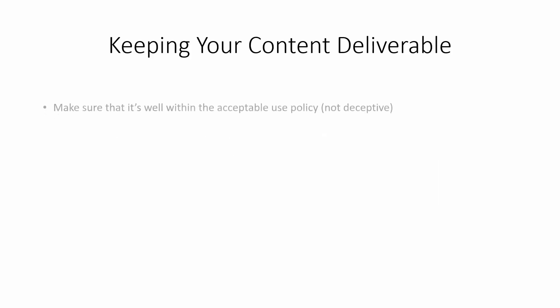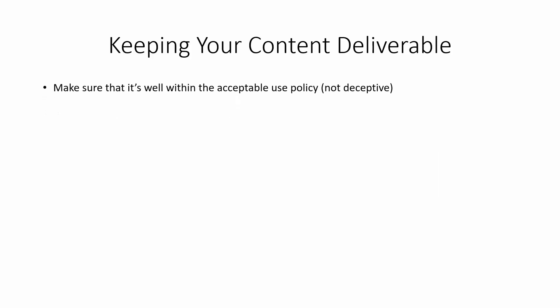Welcome back. Part of the process of working with Amazon SES is making sure that your content is deliverable and that you're avoiding hard bounces. You want to make sure that everything you're writing and putting in your email is well within the acceptable use policy. Basically, what Amazon is really looking for is that you're not trying to deceive anyone and that you're not trying to do a bait and switch — that your email is delivering exactly what it says it's going to.